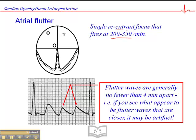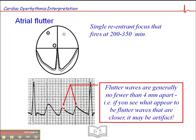One of the easy ways to distinguish between artifact on the baseline and atrial flutter is to look at the distance between the flutter waves. The flutter waves are generally no fewer than 4 millimeters apart. So if you see waves doing bumps that are too close together, there's no way that could be atrial flutter — those bumps are too close to possibly be atrial flutter. More typically the bumps are no fewer than 4 millimeters apart; otherwise you're likely dealing with artifact.